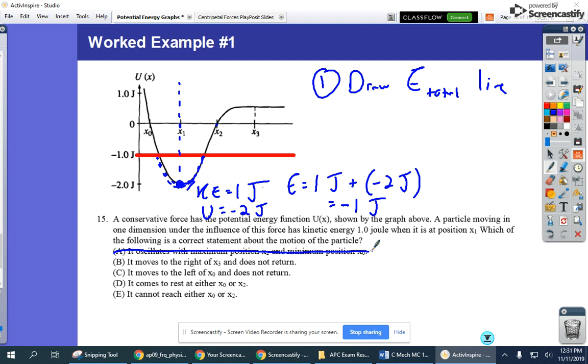Similarly, b is out. It can't get to x3. c is out. It can't get past x0. It can't even get to x0. d, it's not going to come to rest because, again, it can't get there. So actually, the only answer is e. It cannot actually reach x0 or x2. It doesn't have enough energy. It's kind of capped by that total energy line, capped by that total energy line.